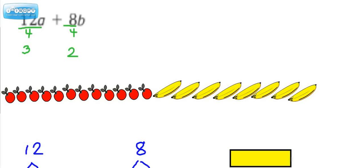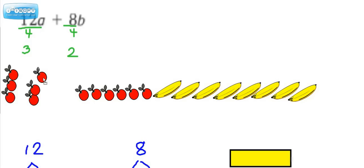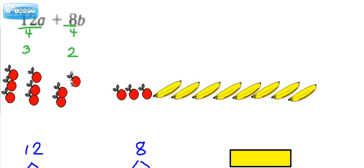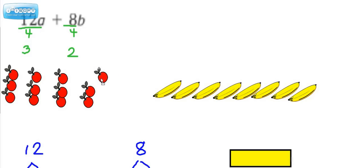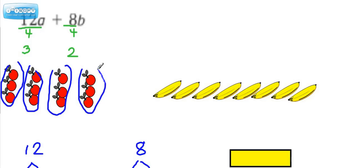That means we're going to rearrange the apples into groups of 3. So let's see what that looks like — 3 apples in each group. How many groups do we have? We have 4 groups of 3.